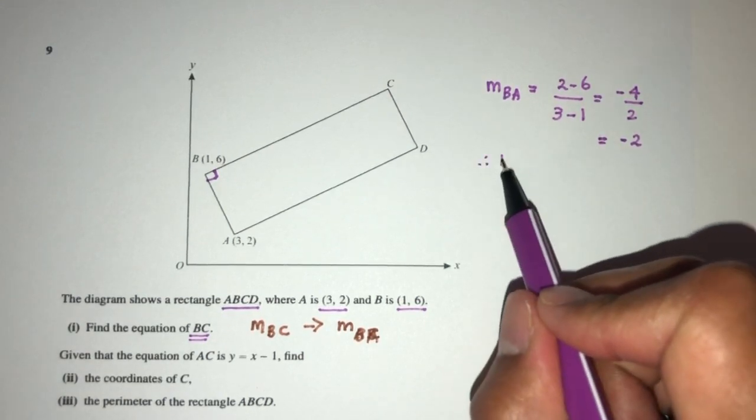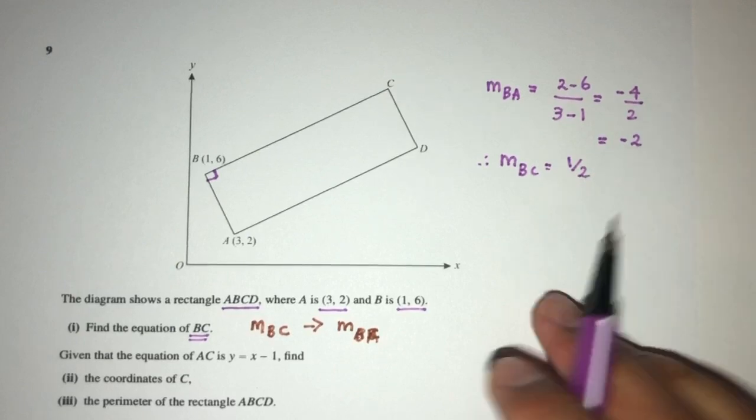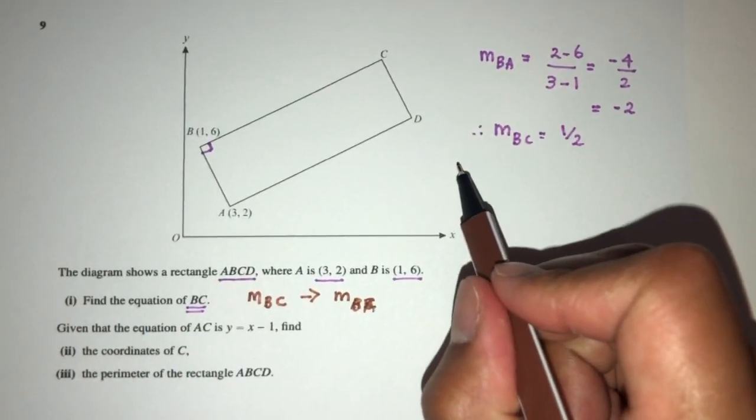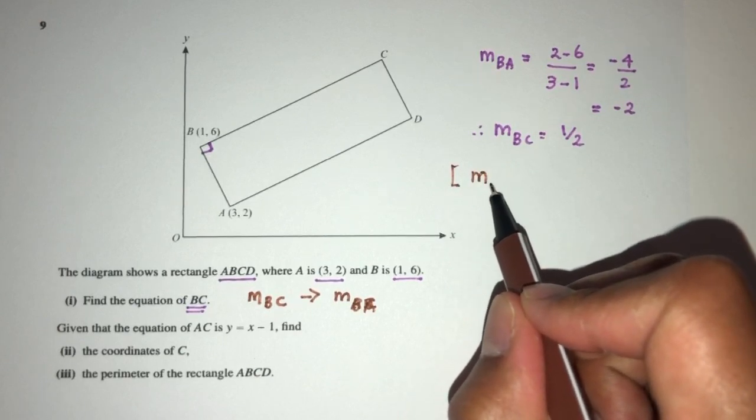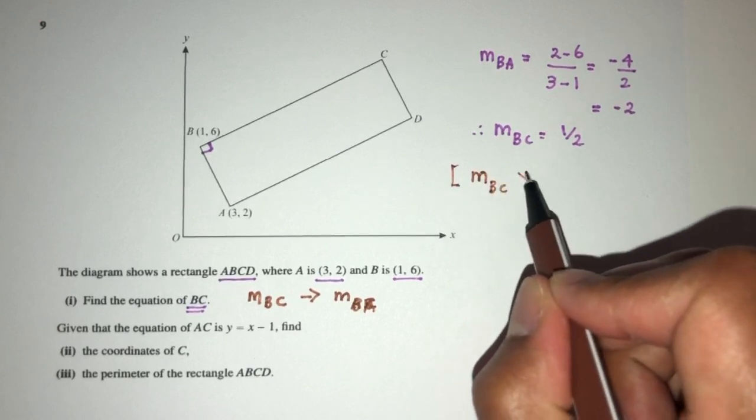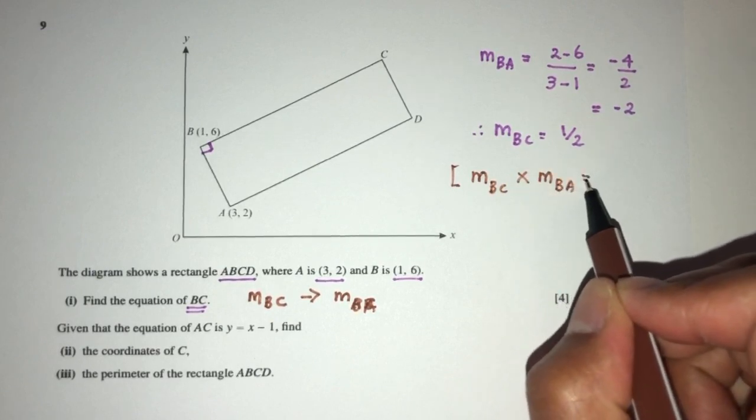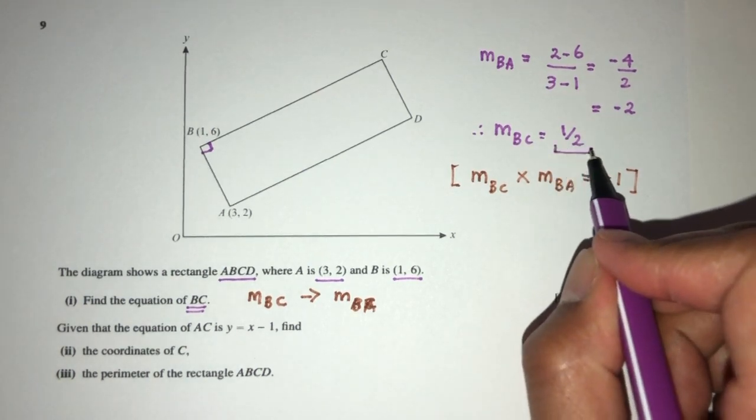From this we conclude that the gradient of BC has to be the value of 1/2, because they are at 90 degrees to each other. So we have to know this concept, which is the gradient of BC multiplied by the gradient of BA has to give you the value of minus 1, because they are perpendicular to each other. That's something we have to know for this kind of question. So now since we have the gradient, we can move on to find the equation.